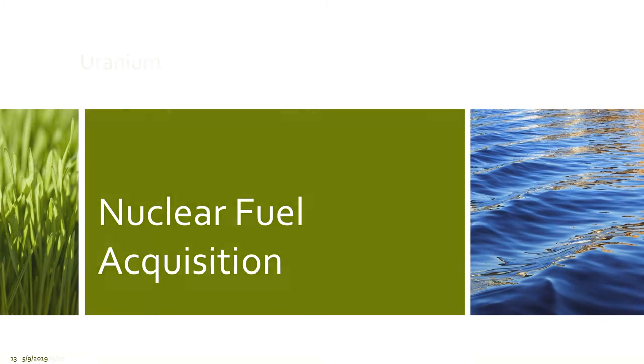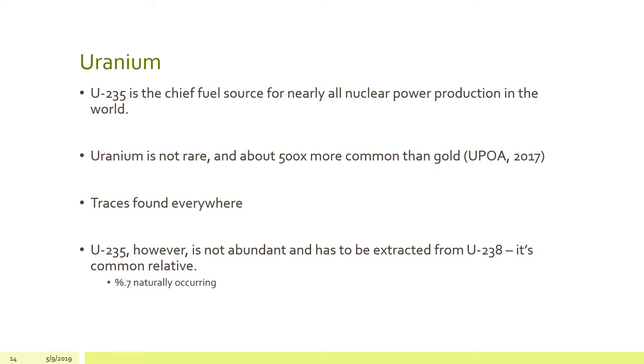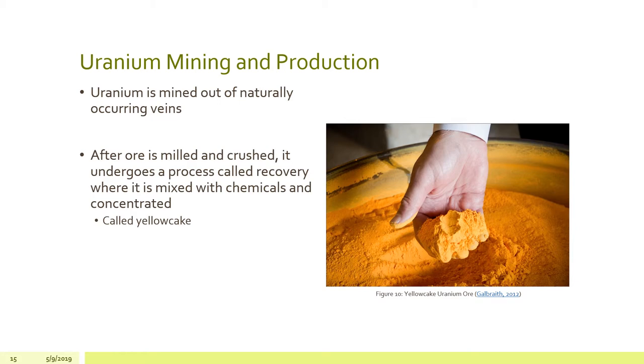Nuclear fuel acquisition. Uranium-235 is the chief fuel source for nearly all nuclear power production in the world. And uranium itself isn't rare. In fact, it's about 500 times more common than gold. However, uranium-235 isotopes specifically is not abundant and has to be extracted from its significantly more naturally occurring uranium-238. It's 0.7% naturally occurring. So quite a bit of processing is required to get usable uranium-235, which has to be from 3-ish to 5-ish percent to use.